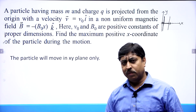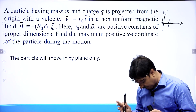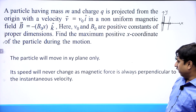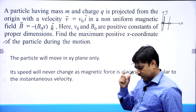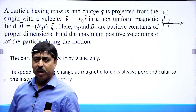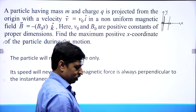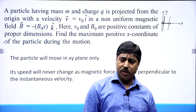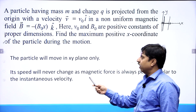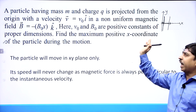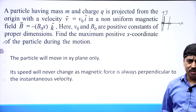The particle is not going to have any component of motion in the z direction; it will stay in the x-y plane. Another fact is its speed will never change, as magnetic force is always perpendicular to the instantaneous velocity. If a charged particle moves under the influence of a magnetic force, its speed never changes — magnetic force never performs any work. So its speed will remain V₀, though the direction of velocity will keep on changing.